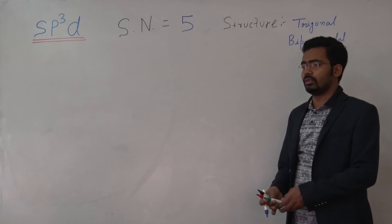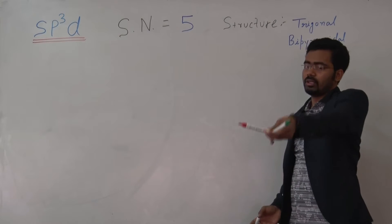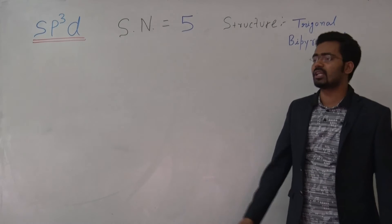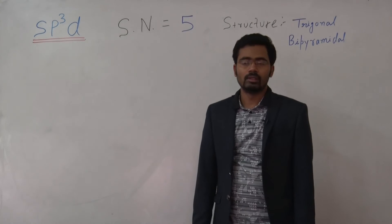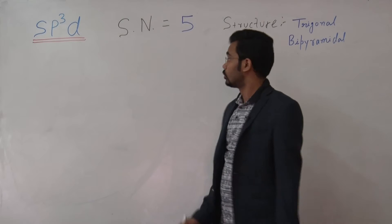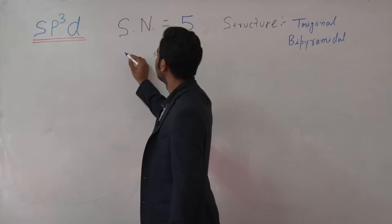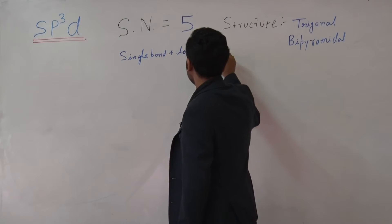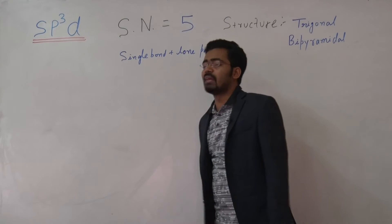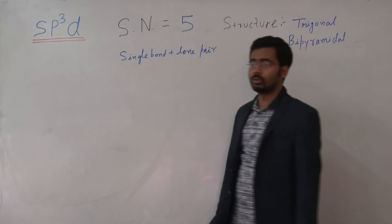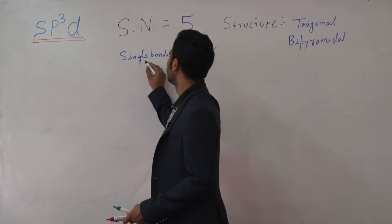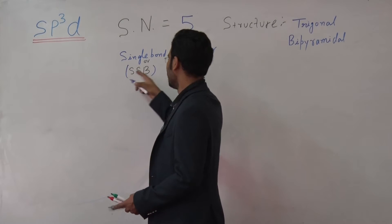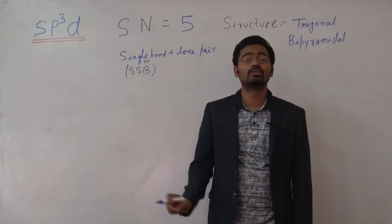What is the trigonal bipyramidal shape? Three atoms are in the equatorial plane, one is above and one is below — that is the trigonal bipyramidal. The steric number is the sum of lone pairs and single bonds. At the place of a single bond, we can also use a super single bond (SSB), where a multiple bond is considered as a super single bond.